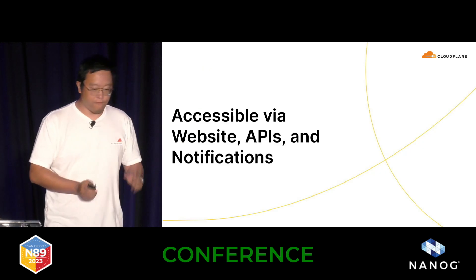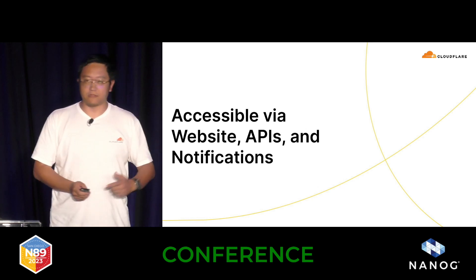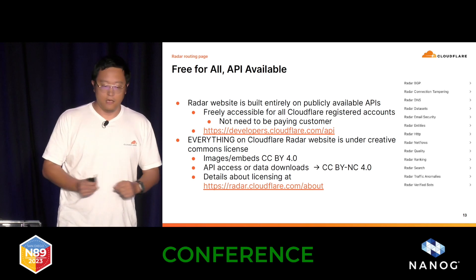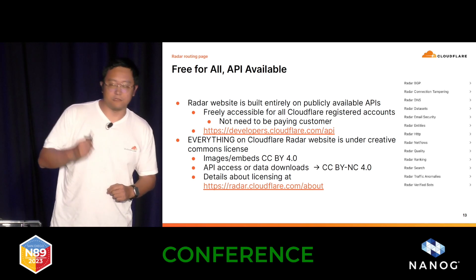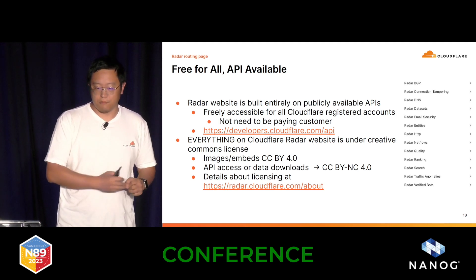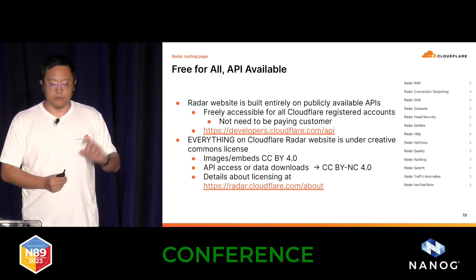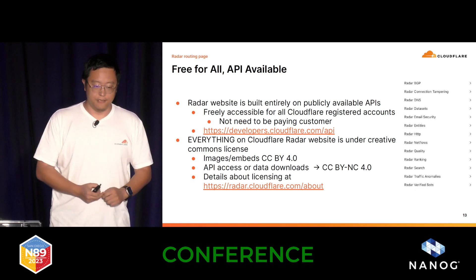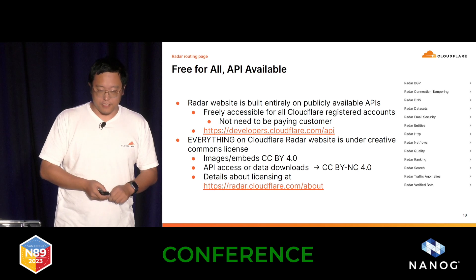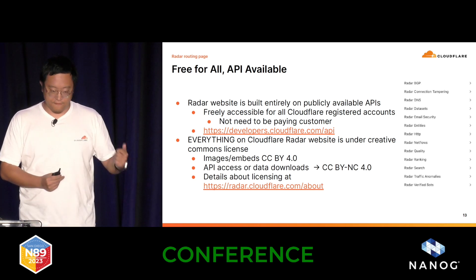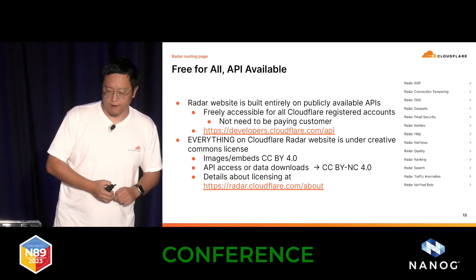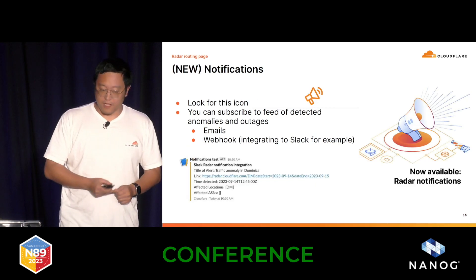All this information is available via the website, the APIs, and now also with notifications. Everything you see on Radar is free to use and available to everyone — the website is completely free. You can use the APIs to access the data; we don't require users to be paying customers. Anyone with a registered Cloudflare account can get an access token and use the APIs to access the same information we use to build the website. Everything on the Radar website is under Creative Commons license — images and embeds are CC BY 4.0 — and the API access has an added non-commercial clause.